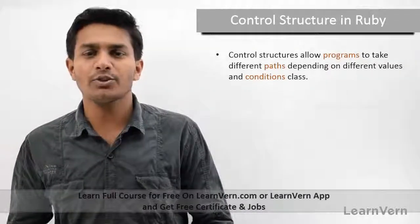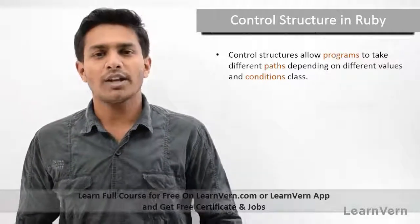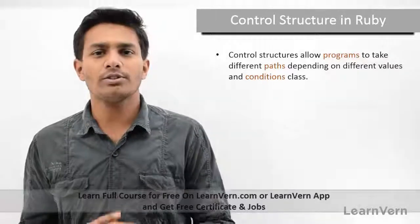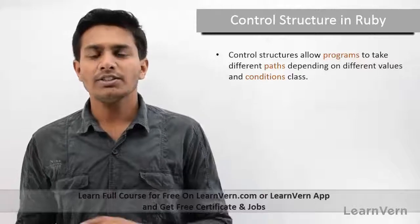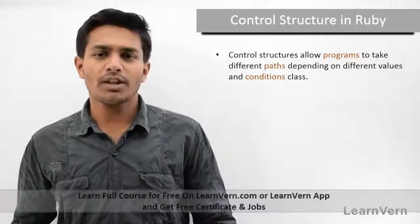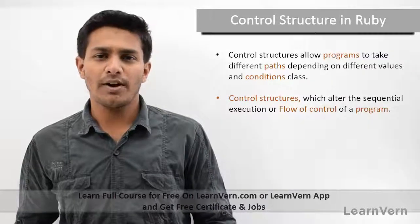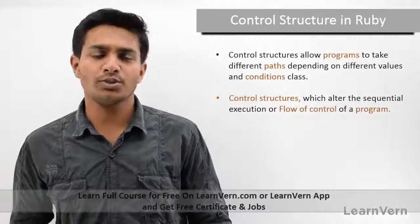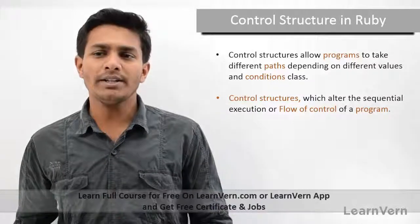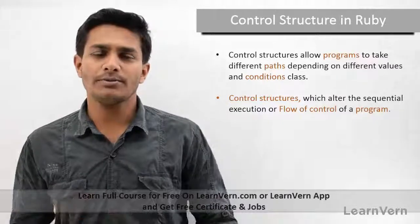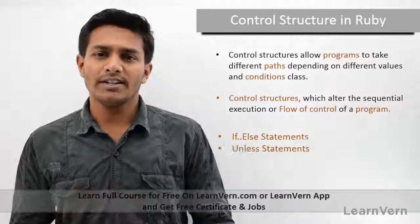Control structures define the flow of execution and the path that we are going to execute in our programs. For example, if we are having some conditional execution, or switching, or we want to break something — in all these scenarios, what we use is the control structure. So control structures define the flow of execution of our program.